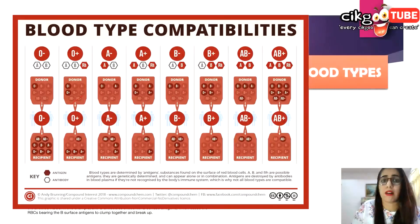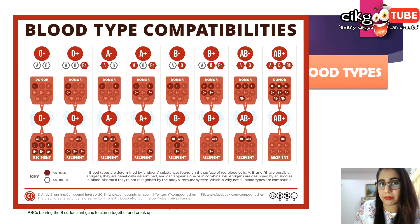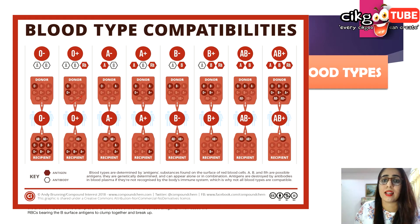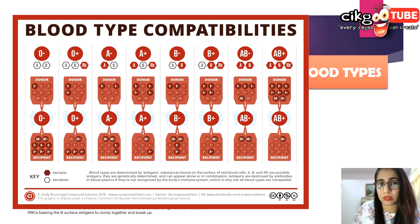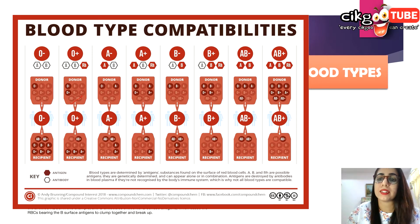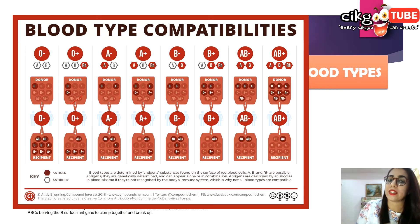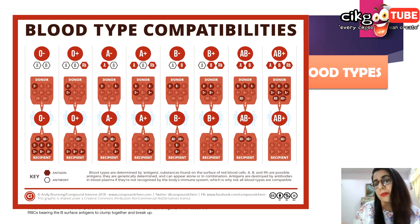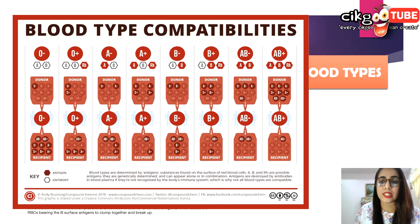Blood transfusion must happen when there is compatibility — the blood group of the donor must be compatible with the recipient to prevent agglutination. Blood transfusion is very important nowadays and can help people survive.